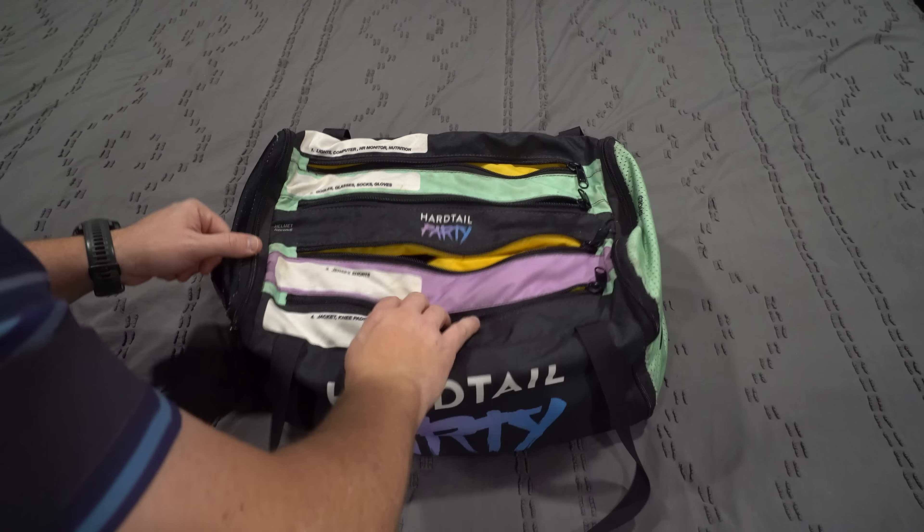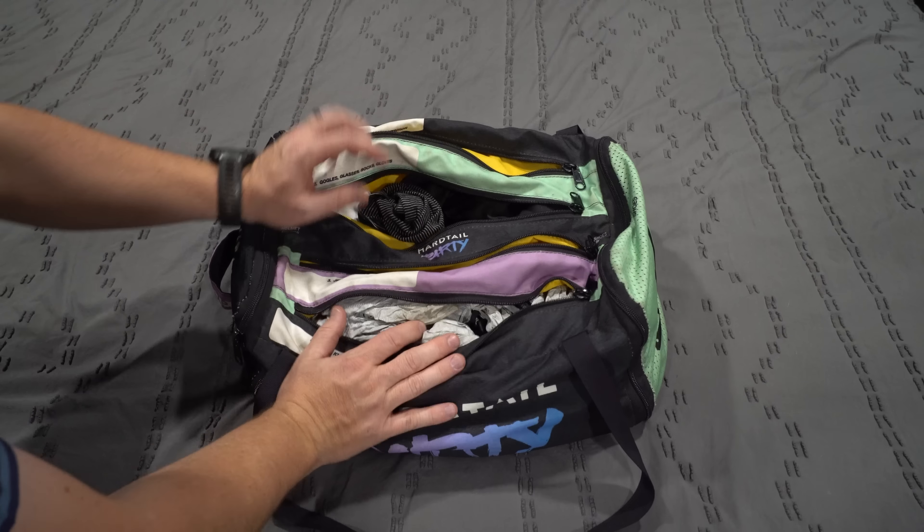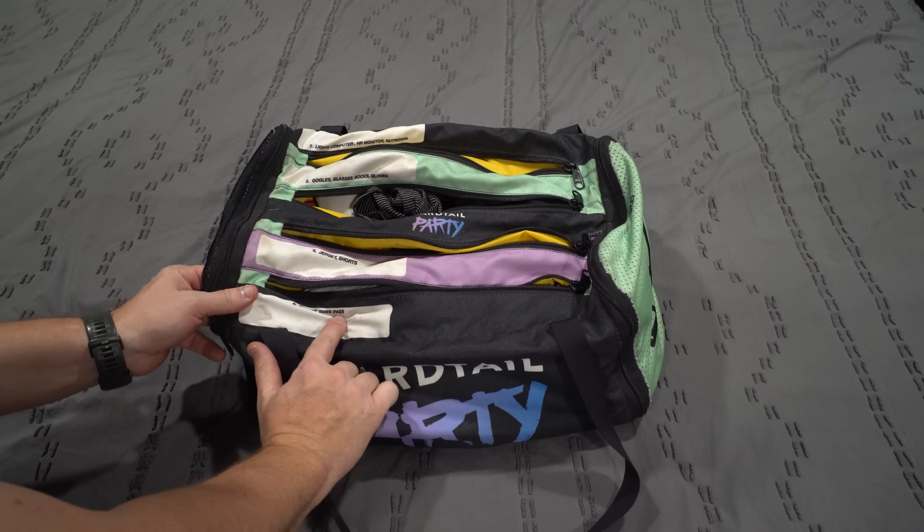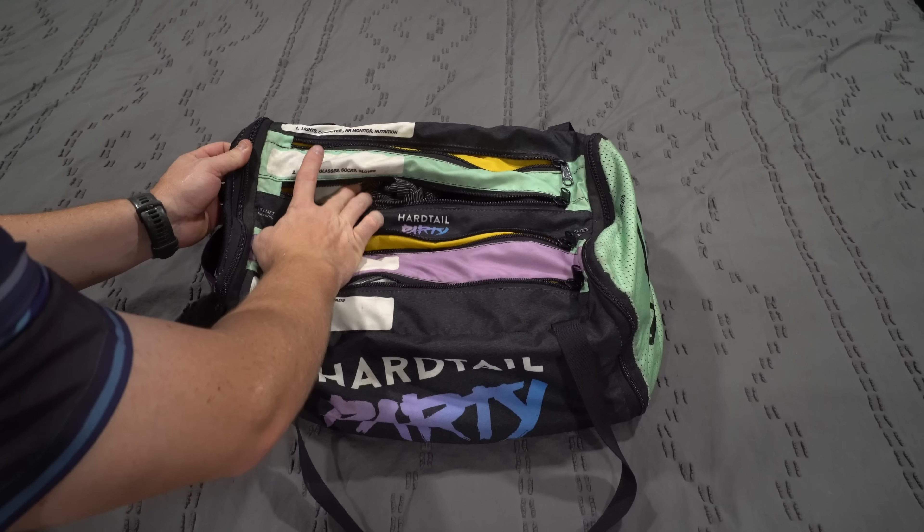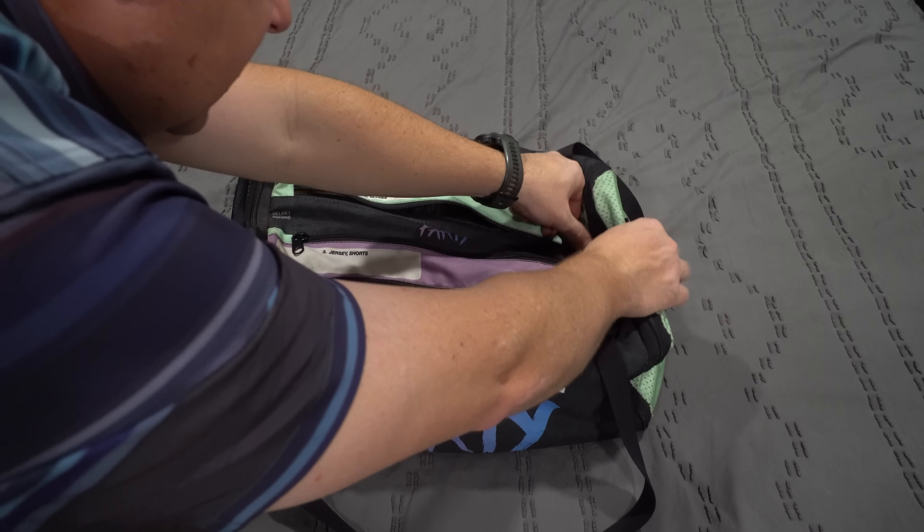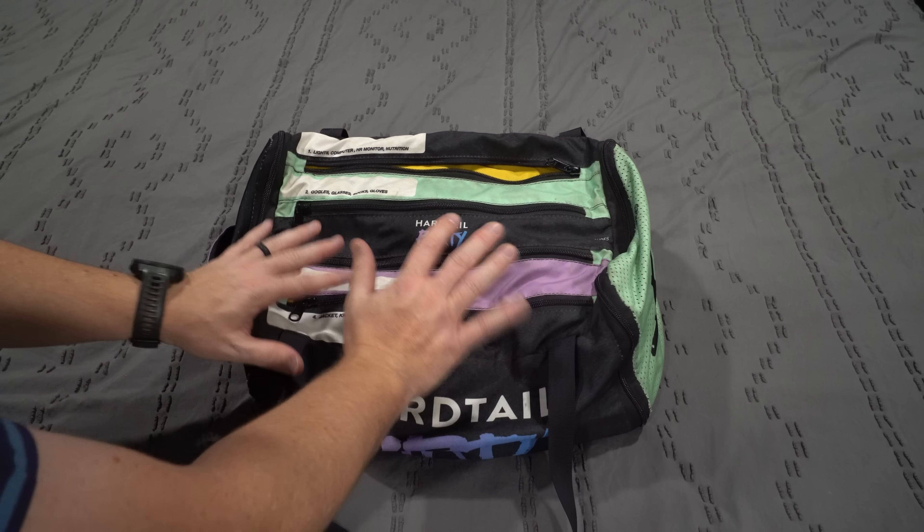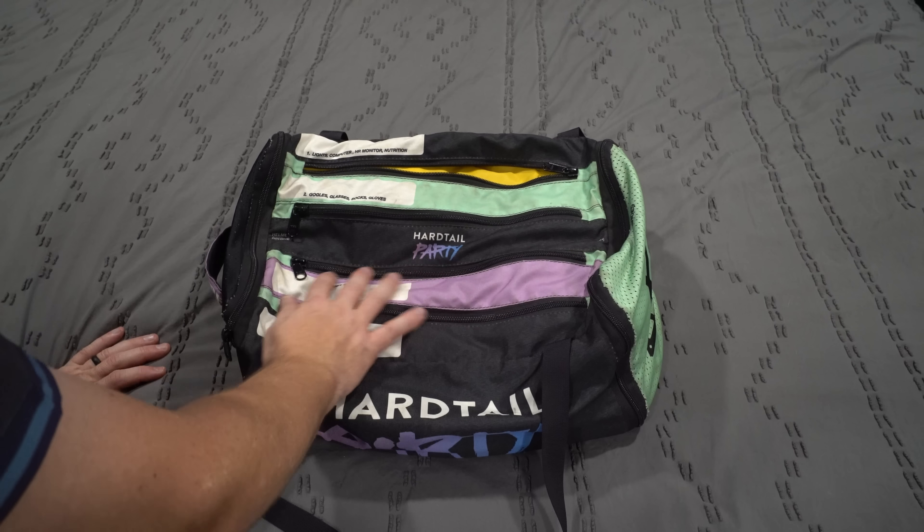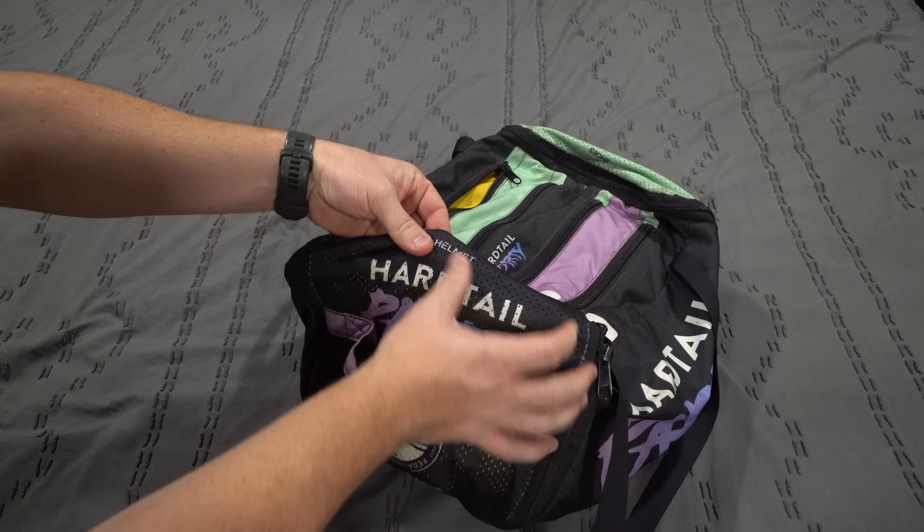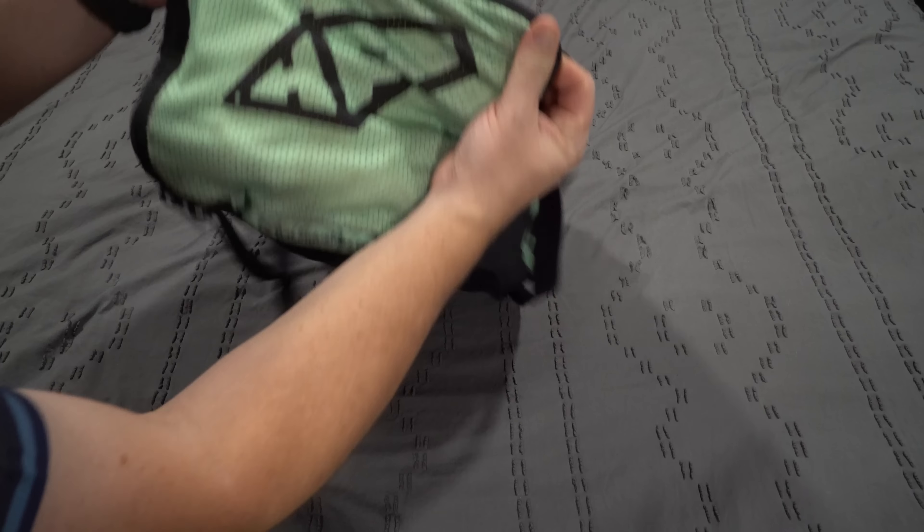This is my race day bag by Pedal Industry. It's got these one, two, three, four pockets for different things. They're labeled. I designed this with them. Jerseys and shorts. Jackets and knee pads. Goggles, glasses, socks. If you love hardtails and you want to keep your stuff organized, this is a great way to do it. Get the hardtail party edition. If you don't love hardtails or don't want this branding, there are other designs as well. You've got storage for your helmet here. And you've got storage for your shoes here.